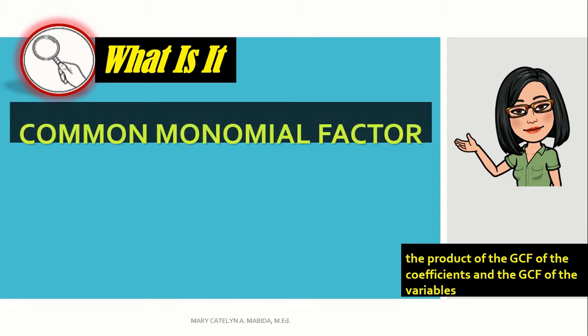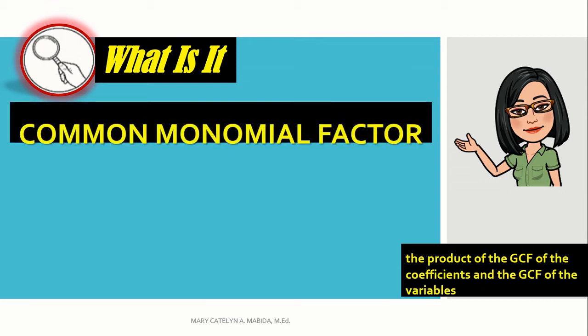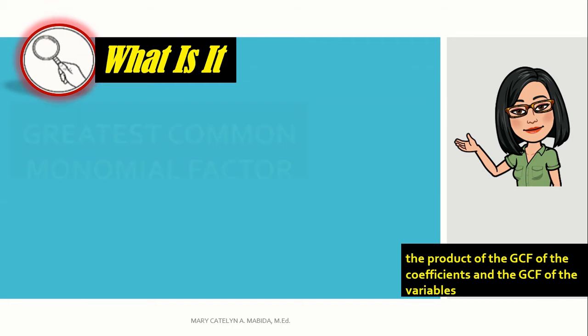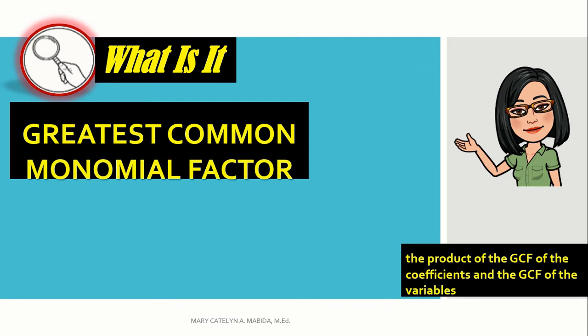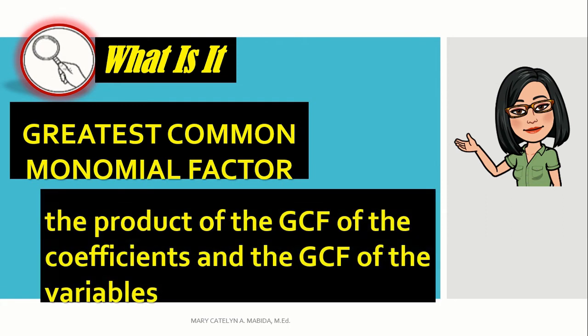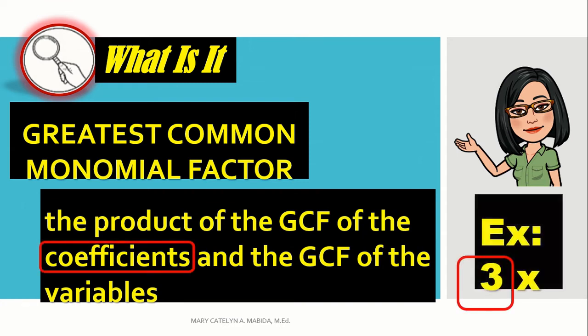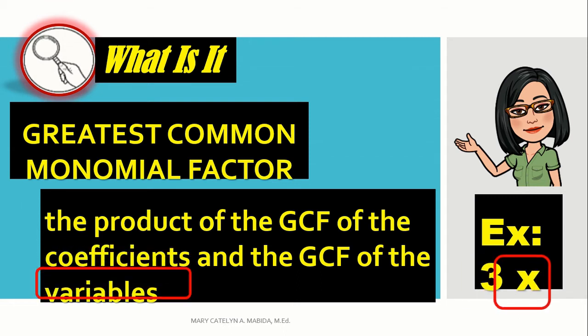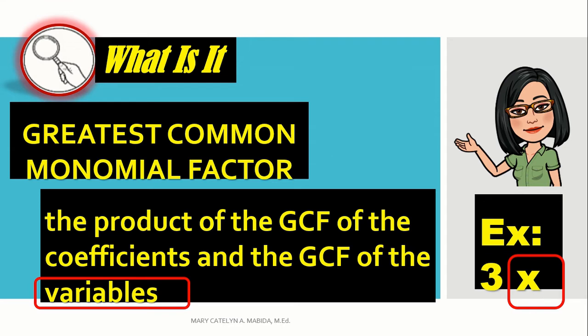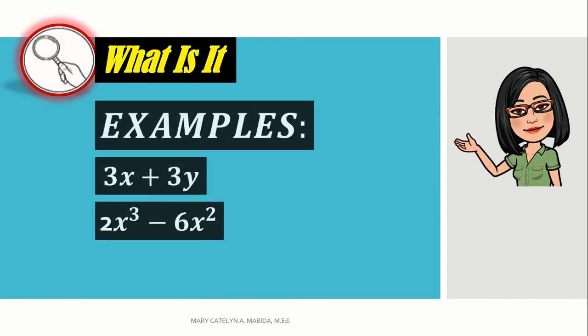The first technique in factoring polynomials is called the common monomial factor. Now, what is the greatest common monomial factor? It is the product of the greatest common factor of coefficients, meaning the numbers, and the greatest common factors of the variables, meaning the letters. Let us try some examples.